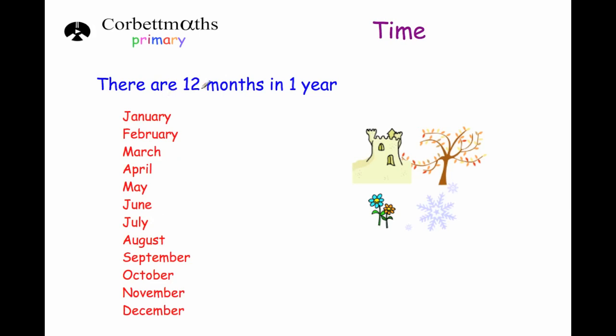In a year there are 12 months. They are January, February, March, April, May, June, July, August, September, October, November, December.